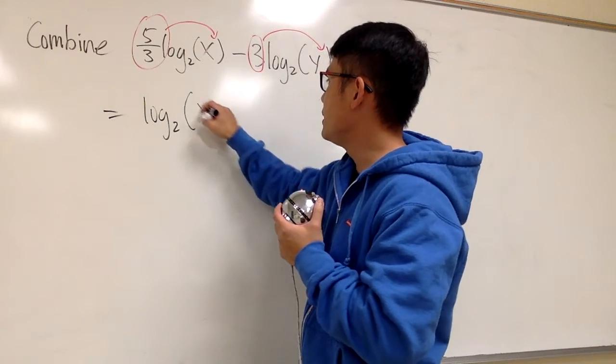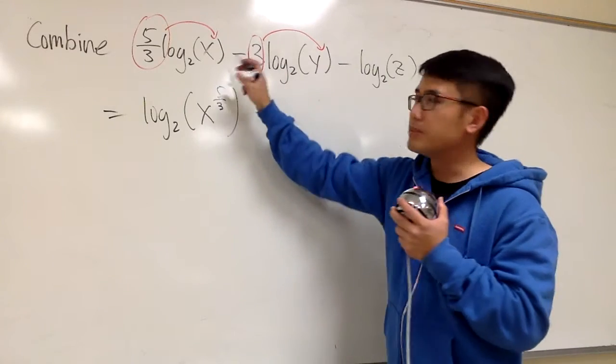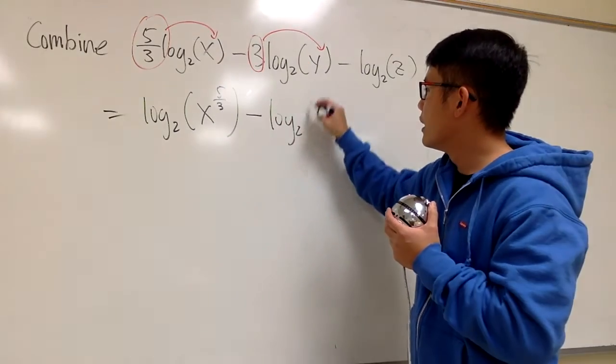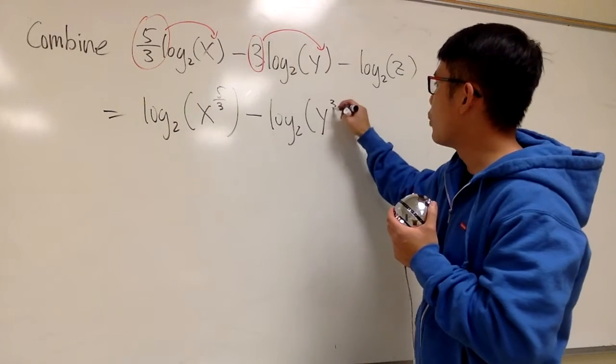This is going to be x raised to the 5 over 3 power. And then we subtract log base 2, and here we have y raised to the 3 power.